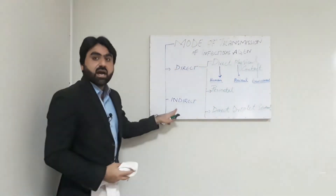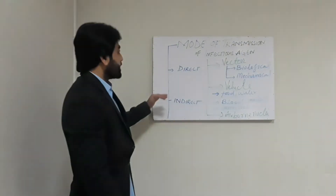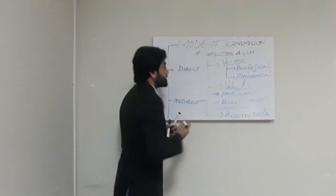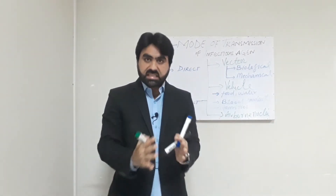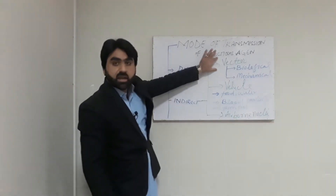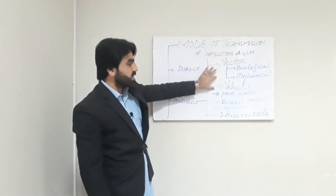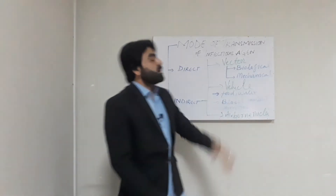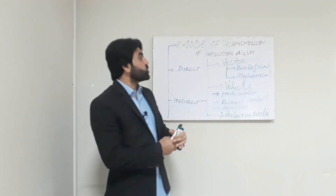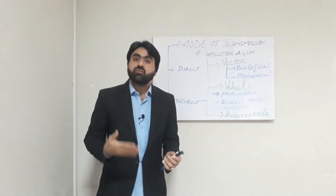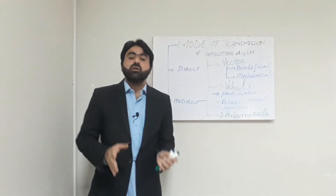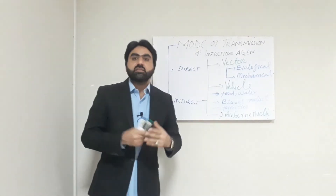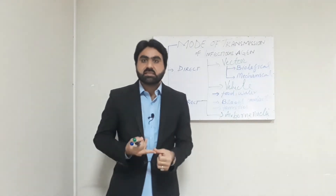Now we will discuss indirect transmission. Indirect transmission of an infectious agent from reservoir to susceptible host can be divided into three different ways: indirect transmission through vector, through vehicle, and through airborne nuclei. A vector is a general term used for a living organism that has the ability to transfer an infectious agent from reservoir to the susceptible host — including mosquitoes, fleas, ticks, and many more.